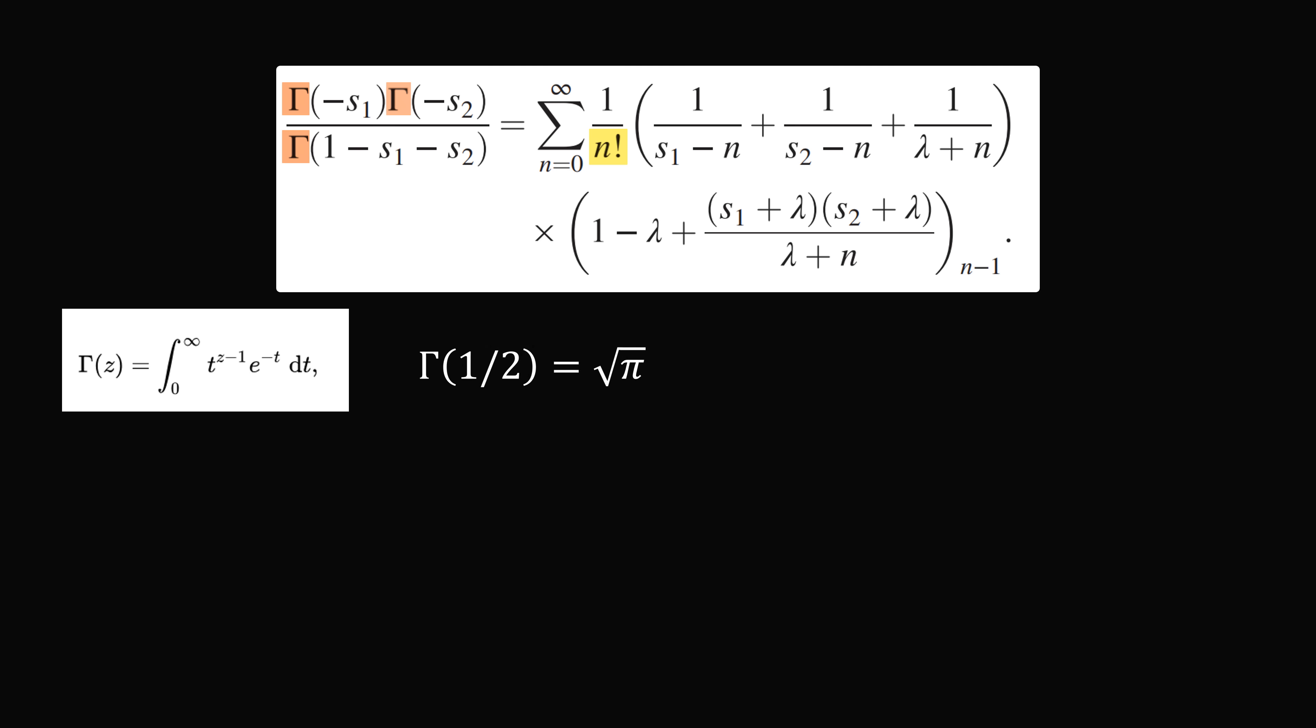We can calculate it from this integral representation. So most famously, gamma of 1/2 is equal to the square root of pi. Gamma of 2 is equal to 1.